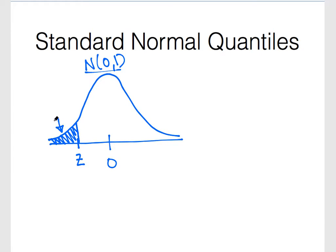For example, we might be looking for the 0.25 quantile, which tells us that we're looking for a z value that separates the lower 0.25 from the upper 0.75.